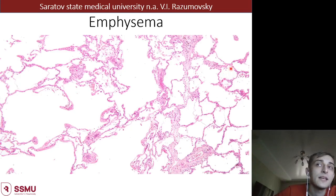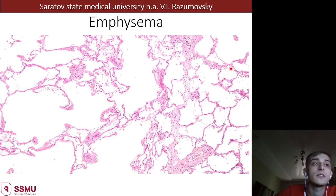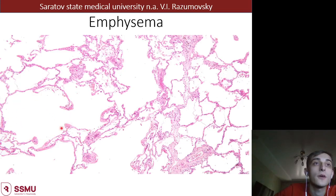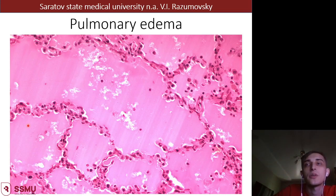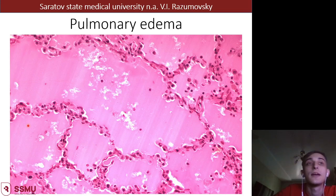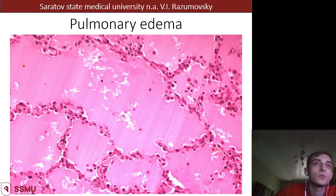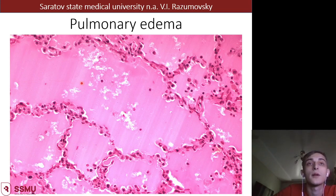Emphysema is the next pathological process and it is opposite to the previous one. It is associated with accumulation of a lot of air in the alveoli and may be associated with rupture of alveolar walls, accumulation of air, and increase of volume of alveoli. Pulmonary edema is the next pathological process which may happen in all pulmonary diseases. It is associated with accumulation of fluids in the lumen of alveoli - we can see liquids and proteins in the lumen as shown on this slide.